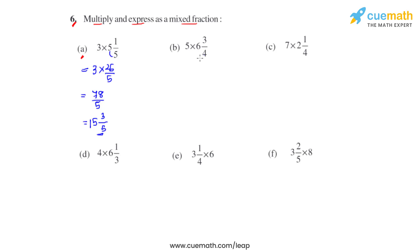Coming to part b, we have 5 times 6 and 3 fourths. Converting 6 3 fourths into an improper fraction: 4 times 6 is 24, 24 plus 3 is 27, so 27 over 4. Multiplying these two gives us the product as 135 over 4. Dividing 135 by 4 gives a quotient of 33 and a remainder of 3.